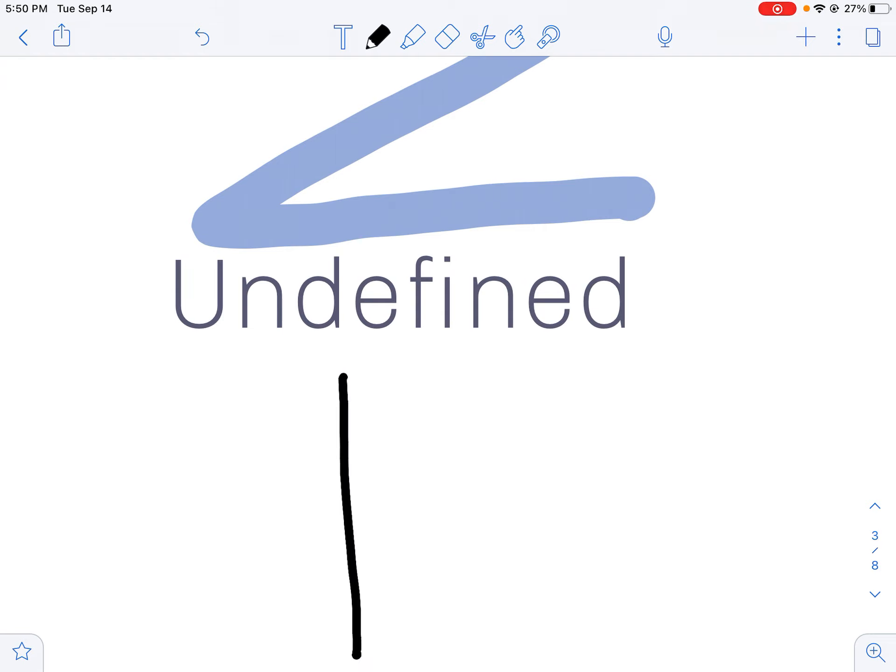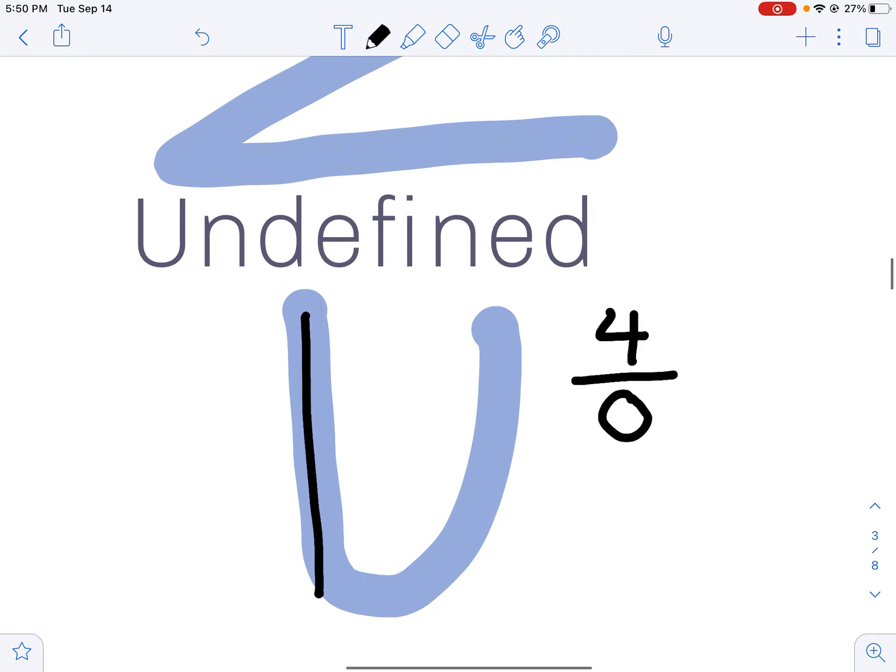Your undefined slope is going to go straight up and down. I always remember it because you can make a U out of it. When you do calculations, you're going to have some number in your numerator—it can be any number—and zero in your denominator. Because we don't know what we get when we divide by zero, we call it undefined.